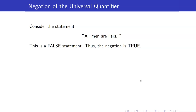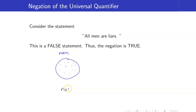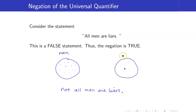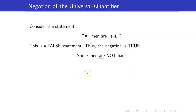Let us now find the negation of the universal quantifier. Consider the statement 'All men are liars,' which is a false statement. To convince another person it is false, we note it is not true that everybody is a liar — not all men are liars. This is the same as saying there is at least one man such that he is not a liar: 'Some men are not liars.' This is the negation.